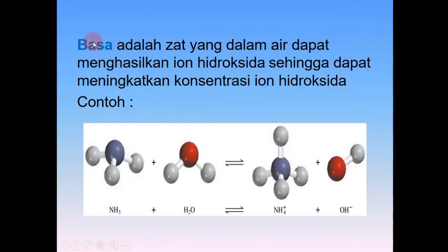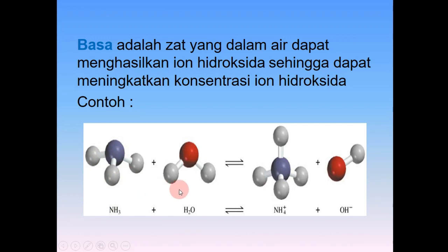Kemudian basa menurut Arrhenius adalah zat yang dalam air dapat menghasilkan ion hidroksida, sehingga dapat meningkatkan konsentrasi ion hidroksida atau OH-. Sebagai contohnya adalah NH3. NH3 ditambah air akan menghasilkan NH4+ plus OH-. Pemberi sifat basa adalah OH-.